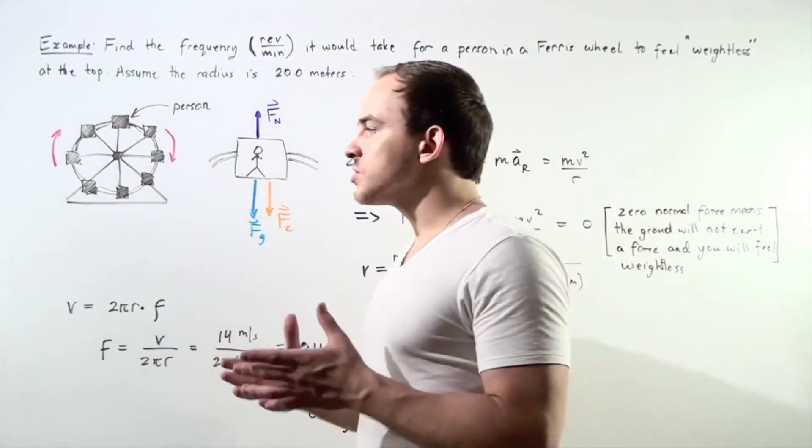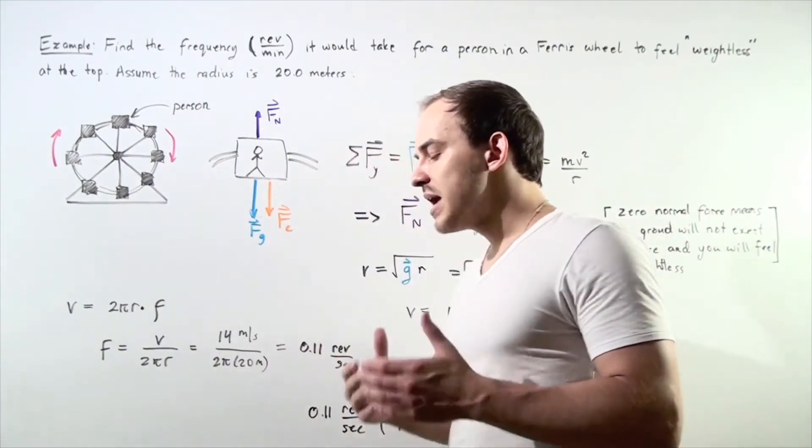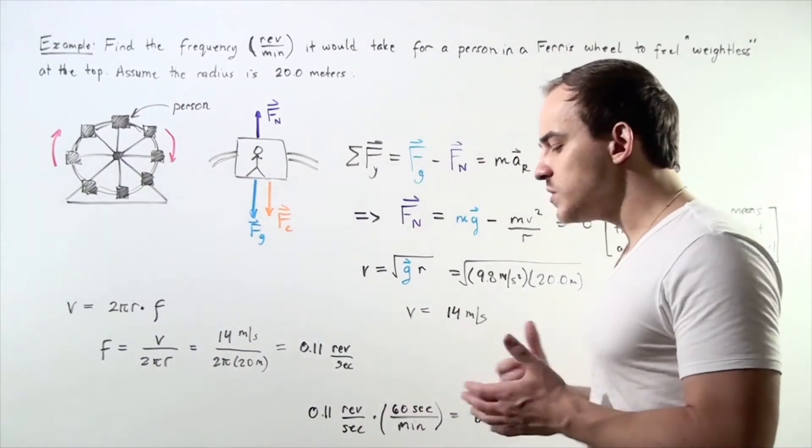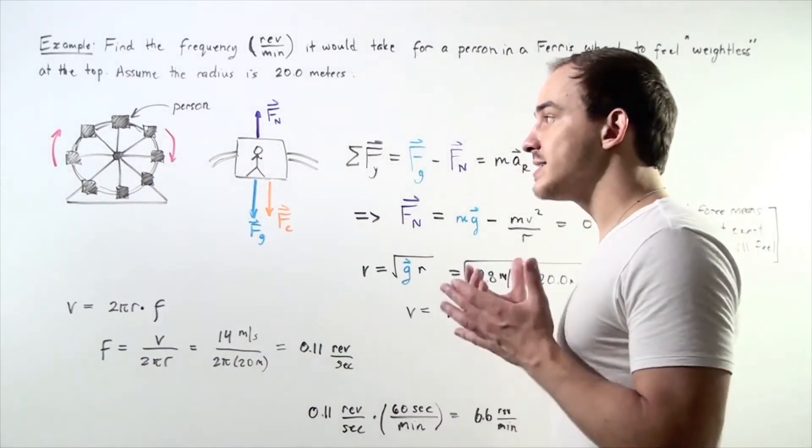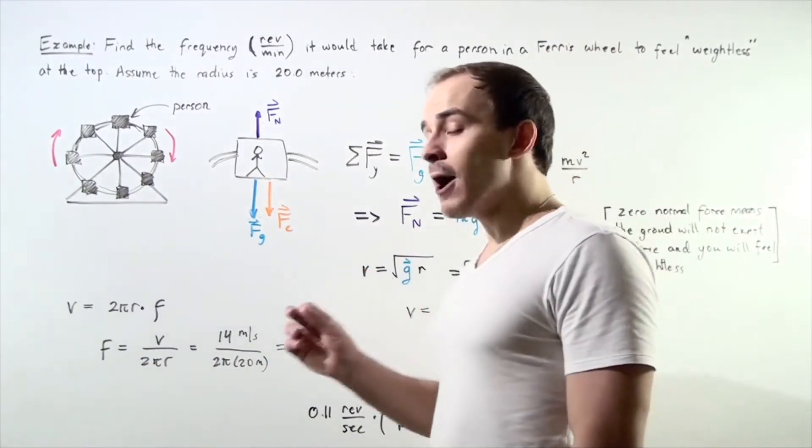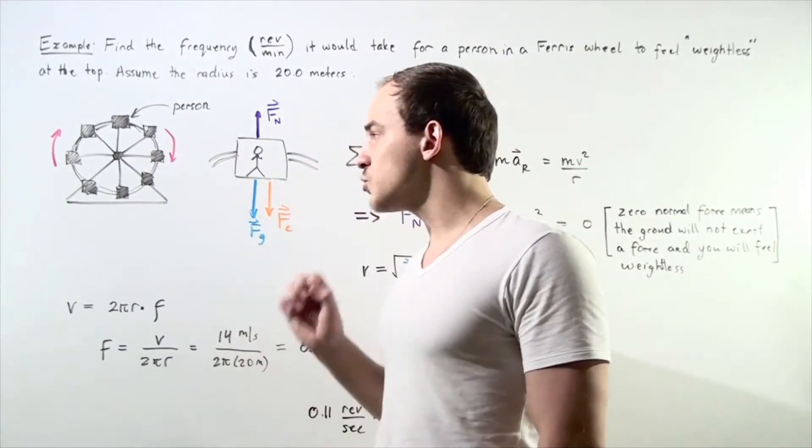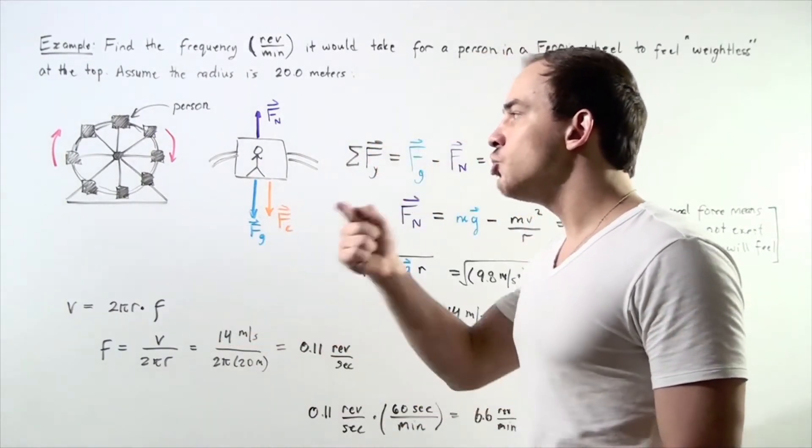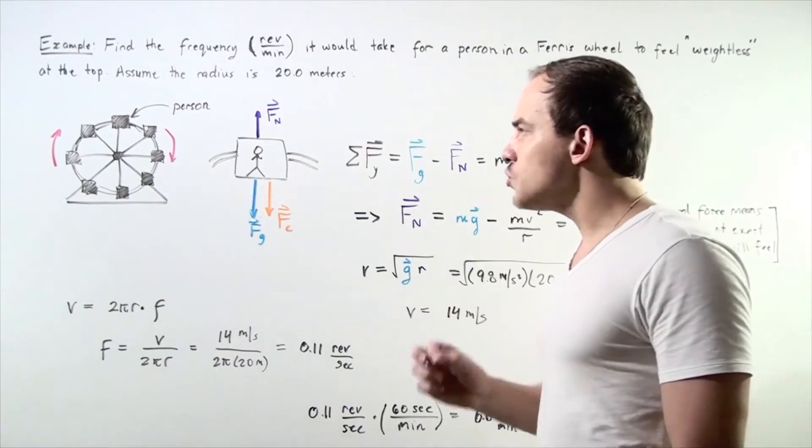Let's suppose that a person gets inside a Ferris wheel and the Ferris wheel begins to rotate with a constant speed. That means our person inside the Ferris wheel is undergoing uniform circular motion.